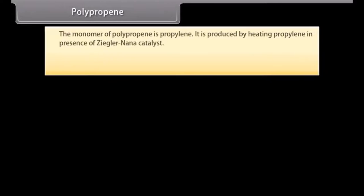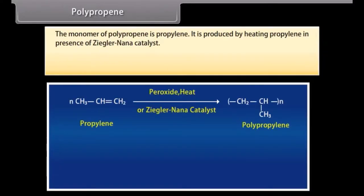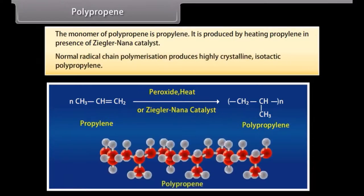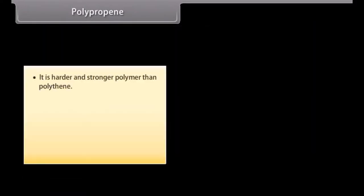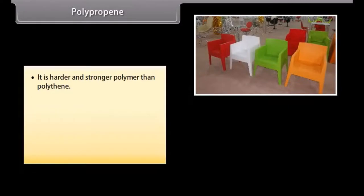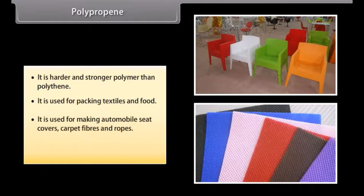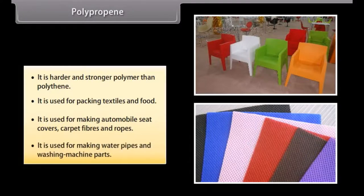Polypropene: the monomer is propylene. It is produced by heating propylene in the presence of Ziegler-Natta catalyst. Normal radical chain polymerization produces highly crystalline isotactic polypropylene. It is harder and stronger than polythene. It is used for packing textiles and food, making automobile seat covers, carpet fibers, ropes, water pipes, and washing machine parts.